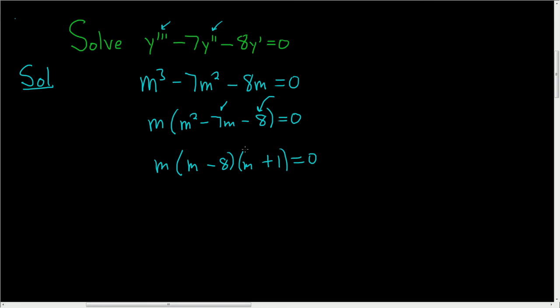And let's check that. If you take the inside terms we get negative 8m, and if we take the outside terms we get m. So negative 8 plus 1 is negative 7, that gives us the middle term. m times m is m squared, and negative 8 times 1 is negative 8, so no issues there.